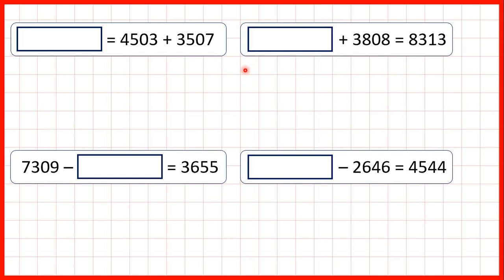We have some missing number addition and subtraction questions, but this first question isn't really a missing number problem at all. That's because all we have on this side of the equal sign is an answer box, and it doesn't matter whether the equal sign comes at the start of a calculation, like it does here, or at the end of a calculation, like it usually does — we do the same thing.